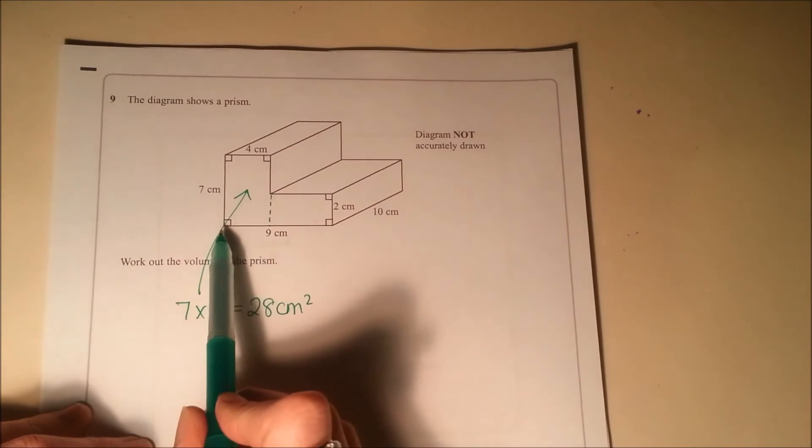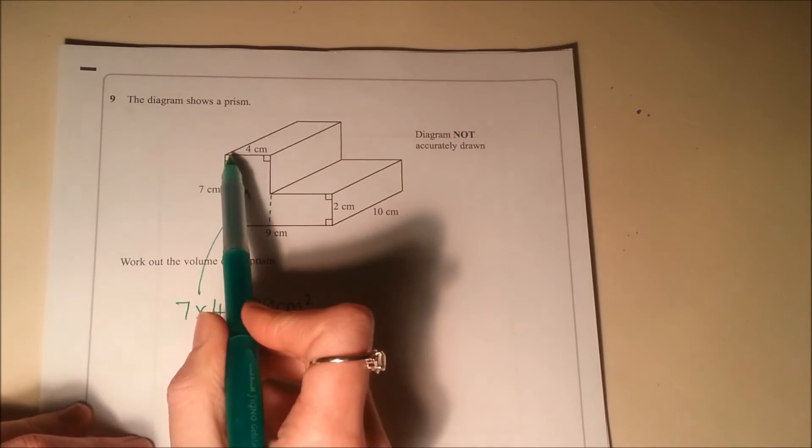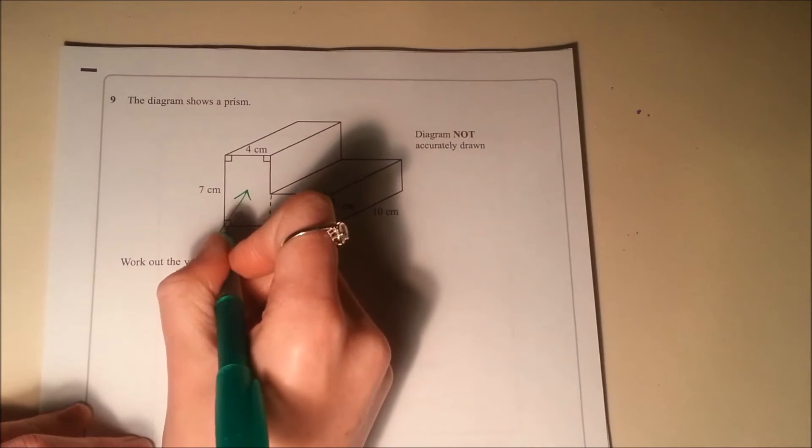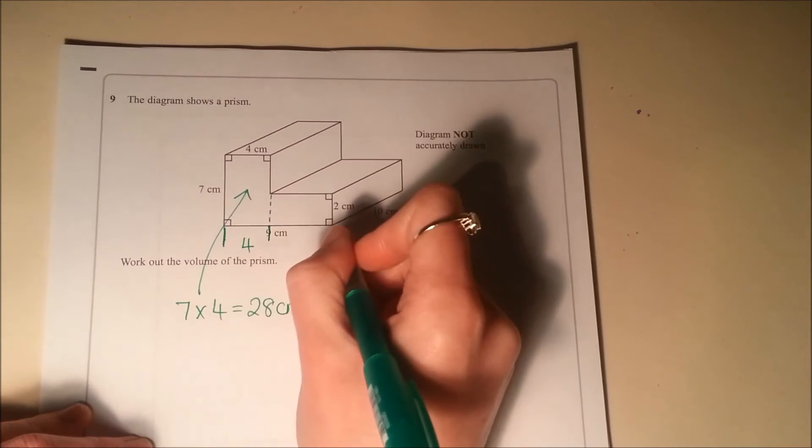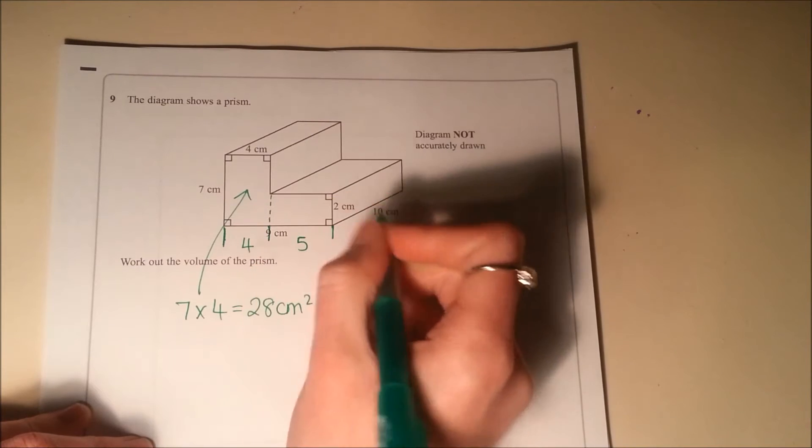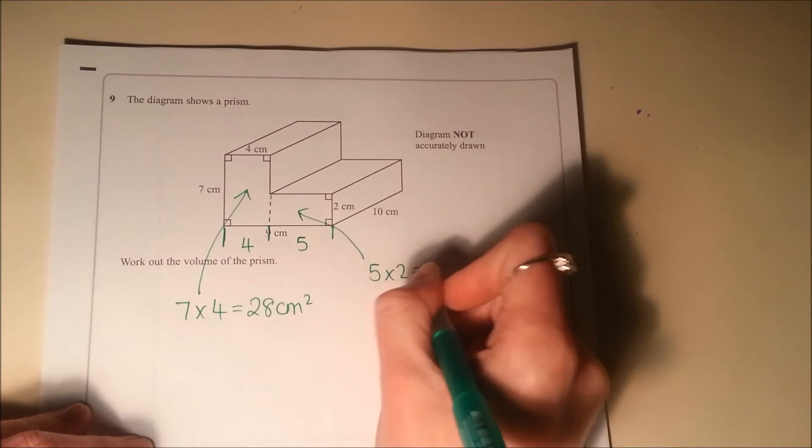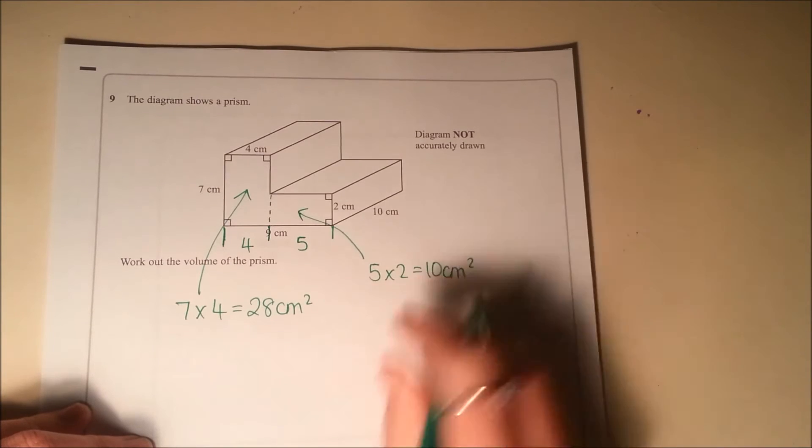If we know that the full length of that is 9 and that length is 4 then that means that this length here is also 4, so this one must be 5. So the area of this is 5 times 2, 10 centimetres squared.